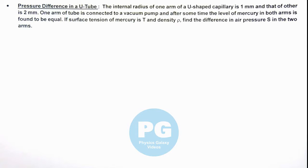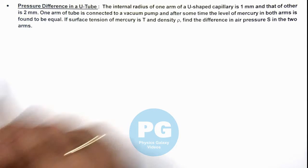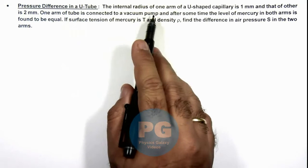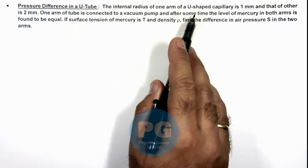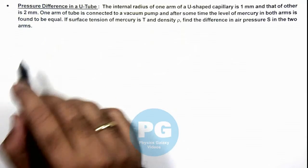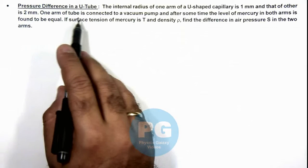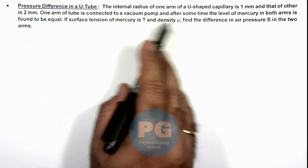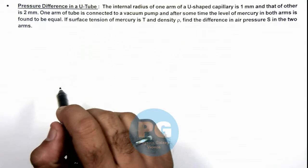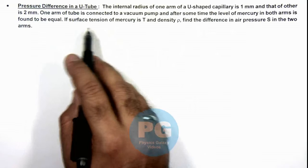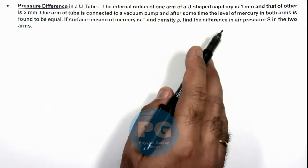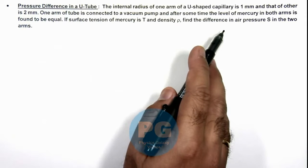In this illustration, we'll be analyzing the pressure difference in a U-tube. We are given that the internal radius of one arm of a U-shaped capillary is 1 mm and that of the other is 2 mm. One arm of the tube is connected to a vacuum pump, and after some time, the level of mercury in both arms is found to be equal. If surface tension of mercury is T and density ρ, we are required to find the difference in air pressure in the two arms.